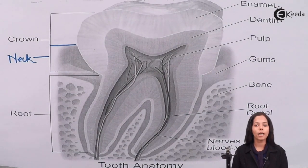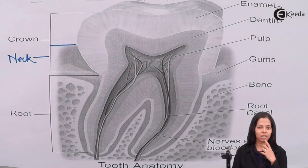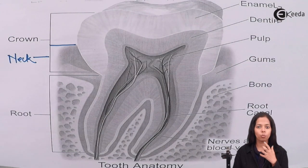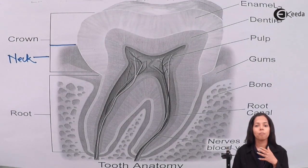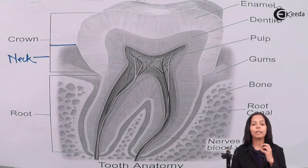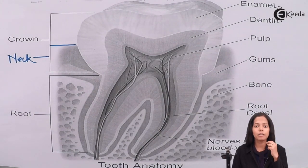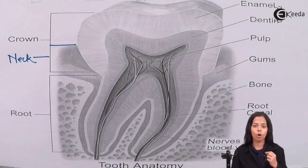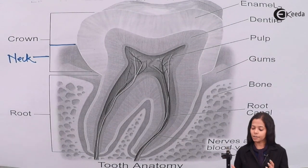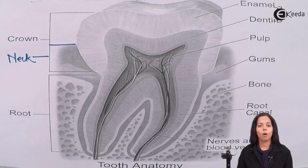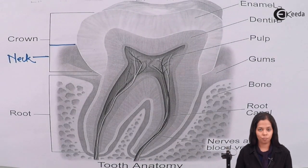The part of the teeth which can be seen above is called the crown — in short, what you can see is the crown. The neck region is present in the gum part, and below the gum there is the jaw bone. The part inserted inside the jaw bone is the root region. Now let's see the parts present in the crown, neck, and root region.